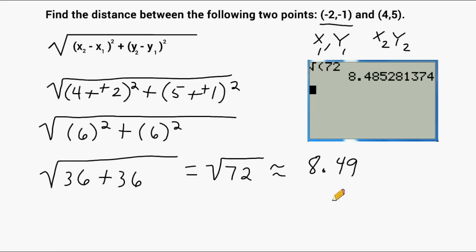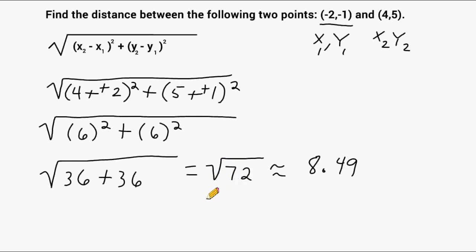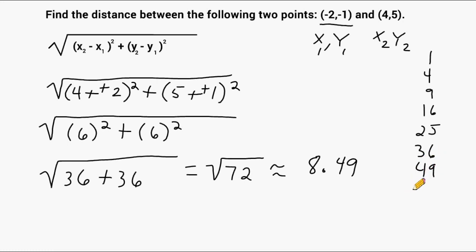Sometimes you may be asked to express your answer in simplest radical form, so let's express the square root of 72 in simplest radical form. The first thing we want to do is figure out if there are any factors of 72 that are perfect squares. The first few perfect squares are 1, 4, 9, 16, 25, 36, 49, 64, 81, and 100 — the results of taking a whole number and squaring it: 1 squared is 1, 2 squared is 4, 3 squared is 9, 4 squared is 16, 5 squared is 25, and so on up to 10 squared.